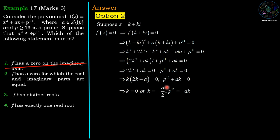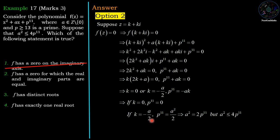From k(2k + a) = 0, we get k = 0 or k = −a/2. If k = 0, then p¹¹ = 0, which is impossible. If k = −a/2, then p¹¹ = −a·(−a/2) = a²/2, giving a² = 2p¹¹. But the given condition states a² = 4p¹¹, so a² = 2p¹¹ is not consistent. Both values are impossible, so z = k + ki cannot be a zero of f. Option 2 is also wrong.